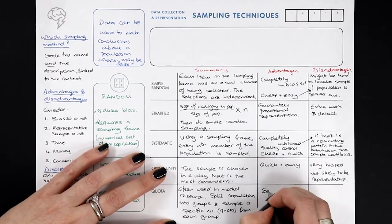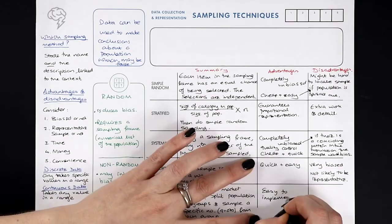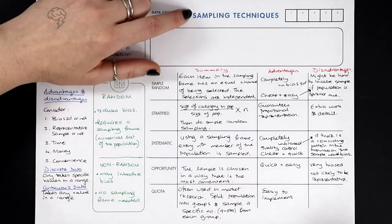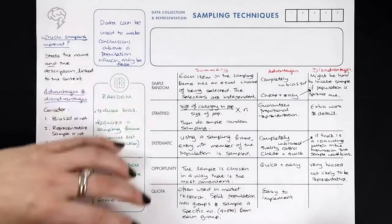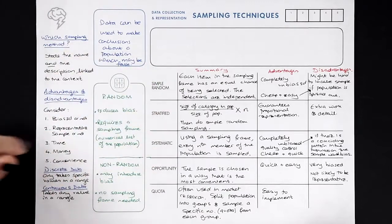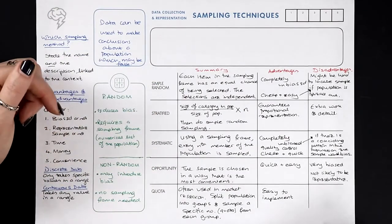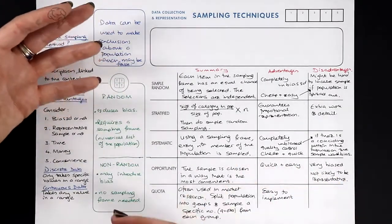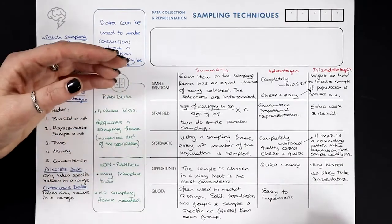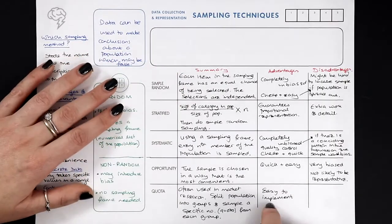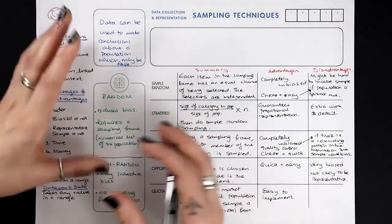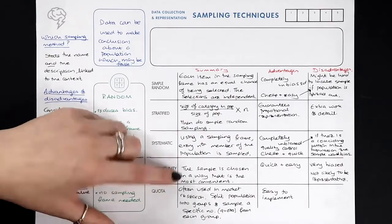Quota sampling is easy to implement. A big advantage is that non-responses aren't a problem. With other methods, if a third of respondents don't reply, you have to go back and find replacements. With quota sampling, if someone refuses or can't be measured, you simply pick the next most convenient person — there's no issue.